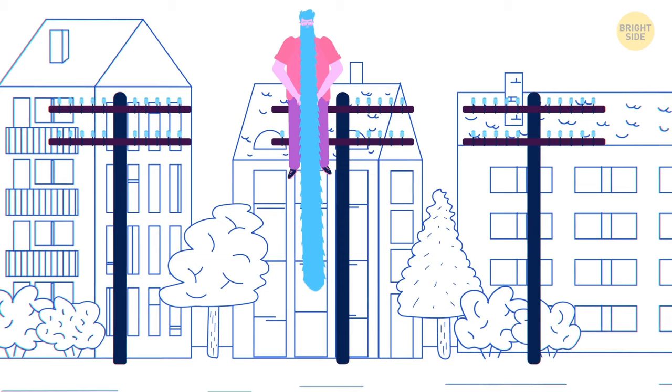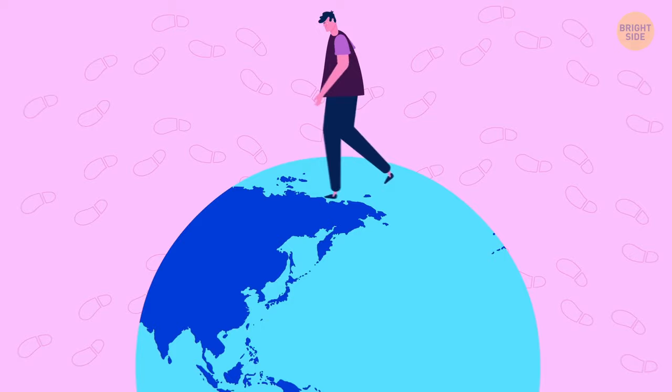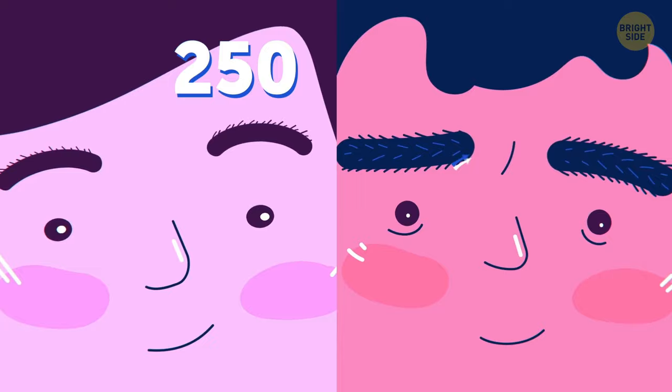It takes just 1 minute for all 5 quarts of blood to get around the body. In a lifetime, the average person will walk the equivalent of 3 times around the world. A person can have from 250 to over 1,000 hairs in each eyebrow.